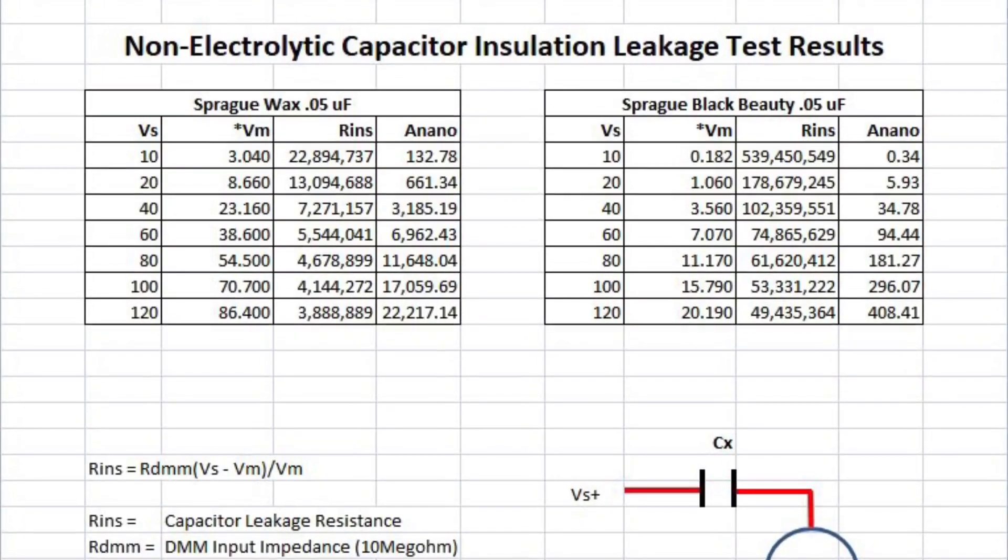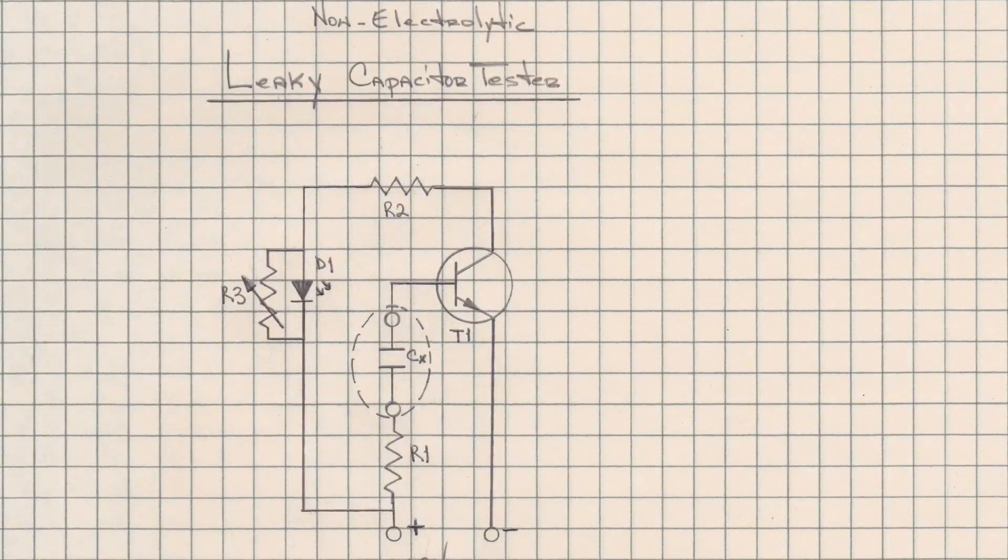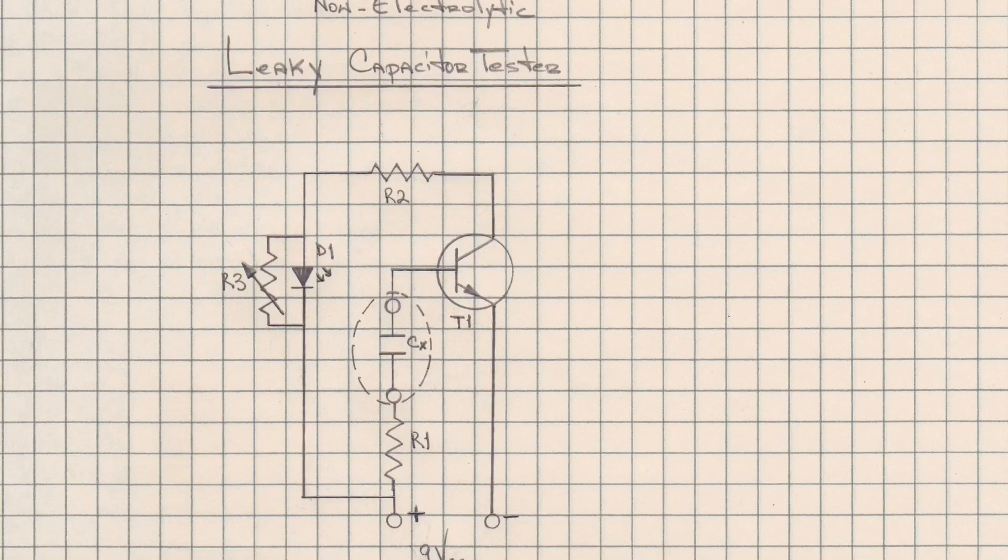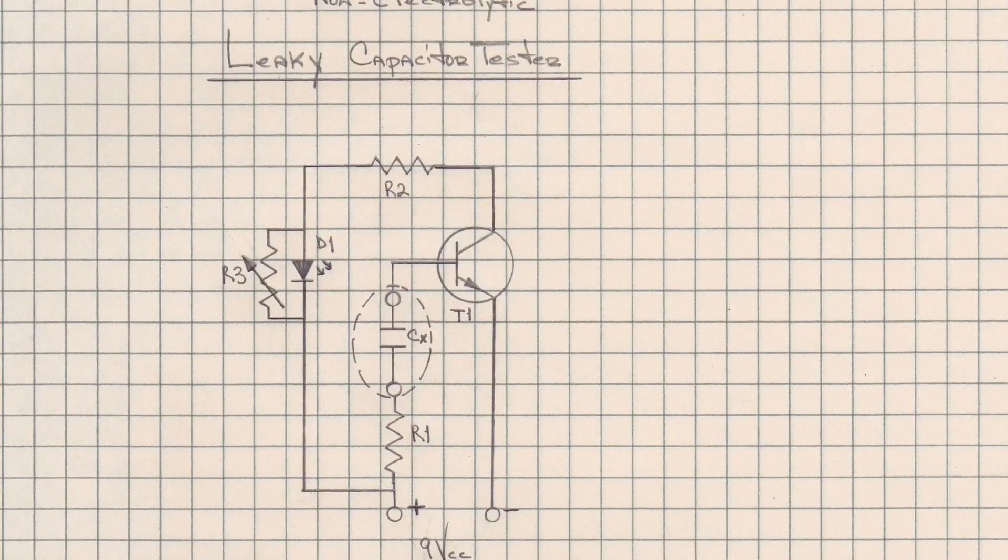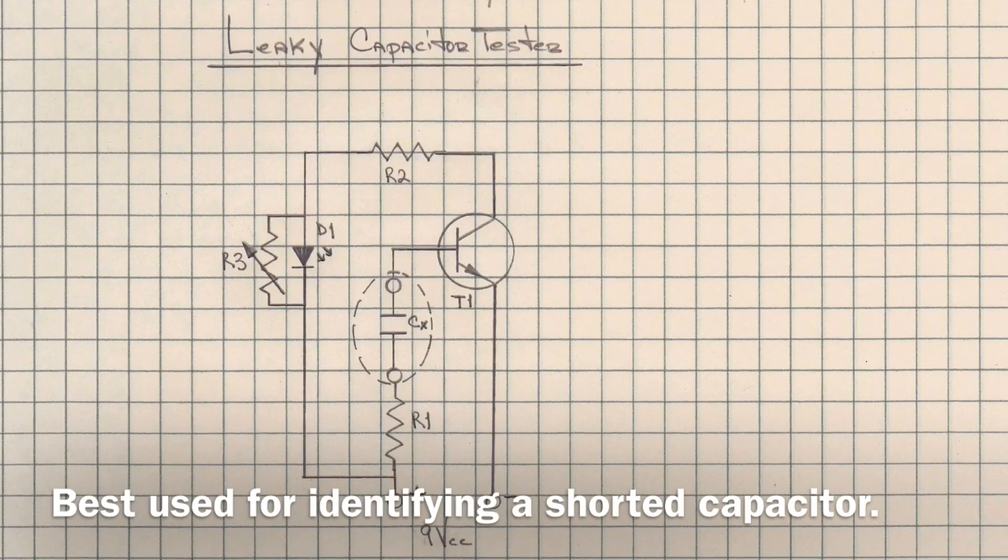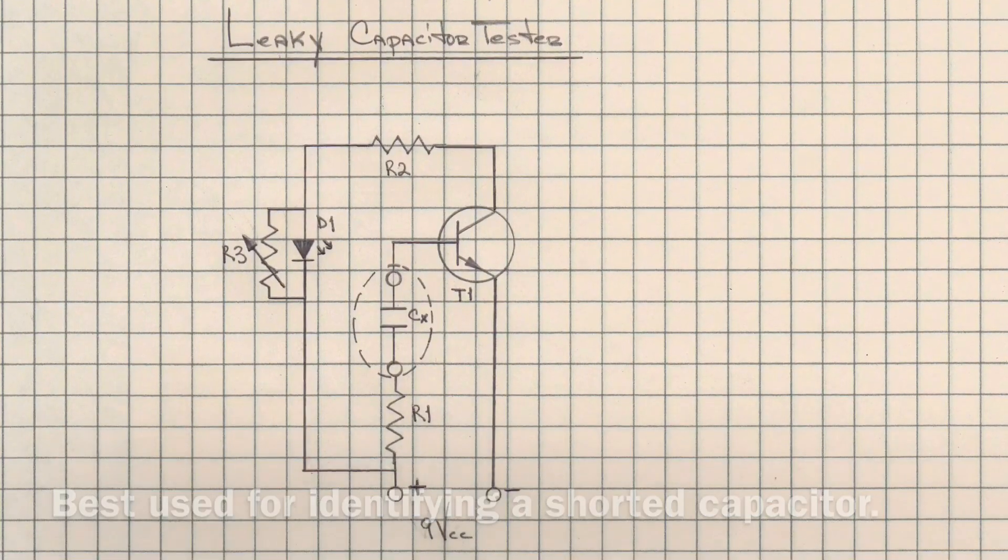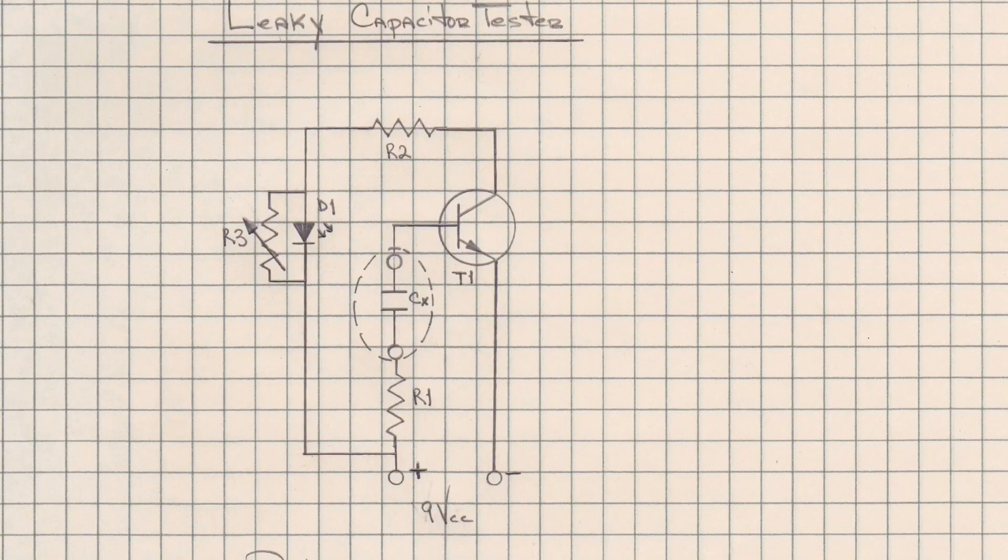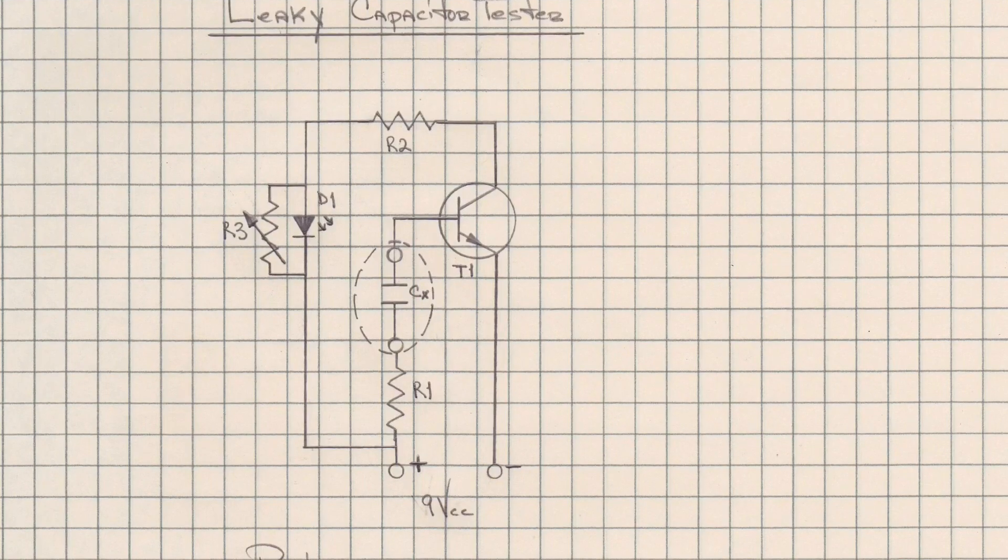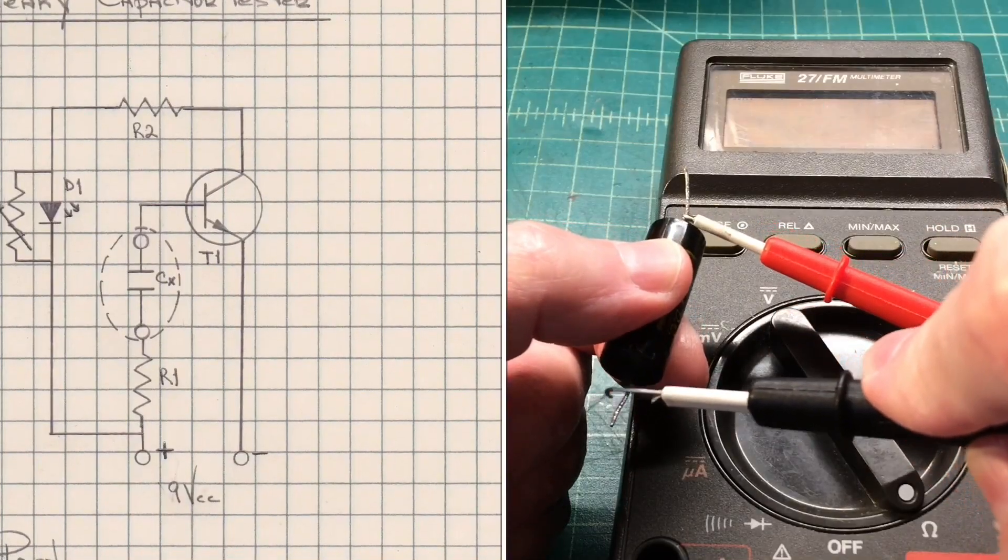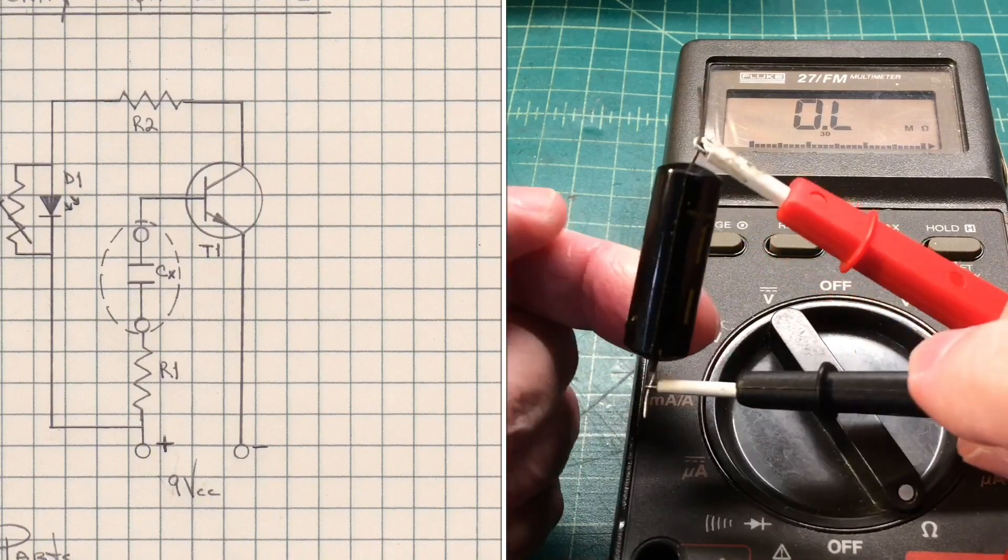One can simply use their VOM, digital multimeter, or VTVM to measure the insulation resistance. Of course there will be limitations to that. In a lot of cases, the applied voltage itself will not be sufficient to make the leakage show itself.